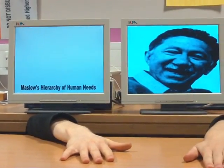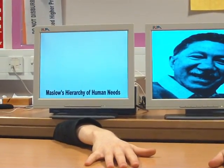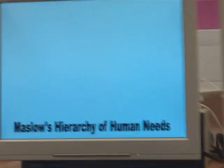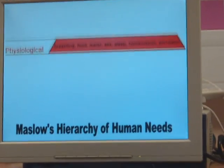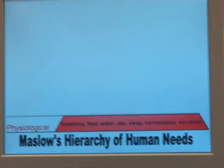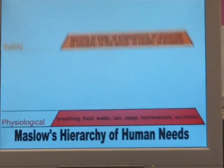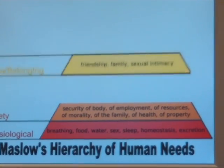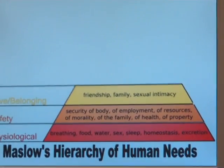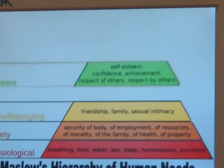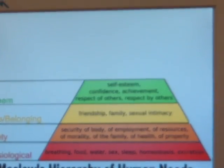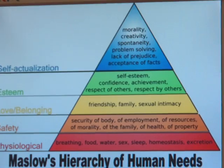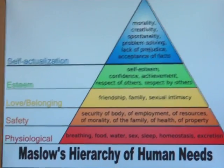Maslow introduced us to his five levels of his hierarchy of human needs. These were: physiological needs, above this was safety needs, then there is love or belonging needs, then comes esteem needs, and finally there is self-actualisation needs. This made up, as you can see, a pyramid.